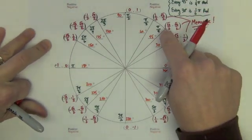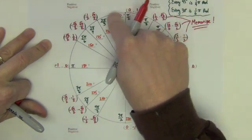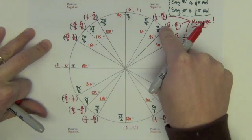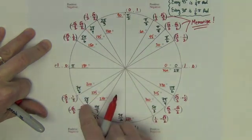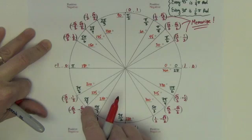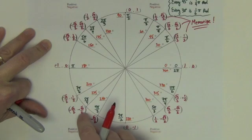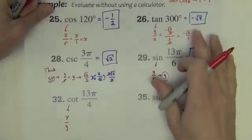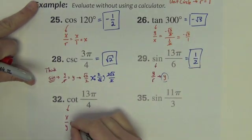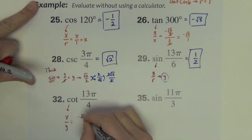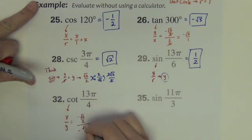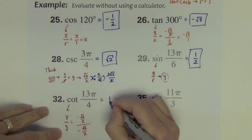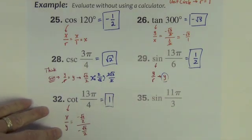So counting out to 13 pi over 4. Here's 1 fourth, 2 fourths, 3 fourths, 4 fourths, 5 fourths, 6 fourths, 7, 8, 9, 10, 11, 12, 13. 13 pi over 4 is right there. There's its x and its y. Let's bring back our problem. Its x is negative square root of 2 over 2. Its y is negative square root of 2 over 2. We've got the same number divided by itself. That reduces very simply to 1.